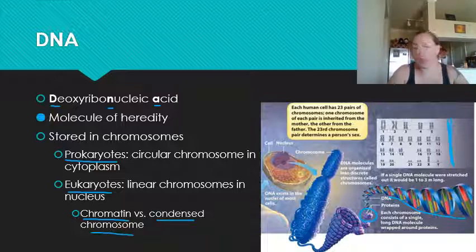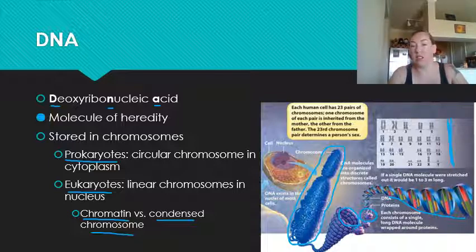And it does that by rewinding around histones, winding those histones up into these nucleosomes, winding nucleosomes into the spiral shape, and then winding that even more into this very large molecule called a condensed chromosome. So chromosome, depending on the scale you're talking about, can just be the shape linear or circular of the DNA, or it can be this very highly condensed, very, very large molecule.